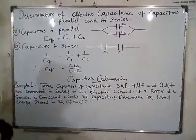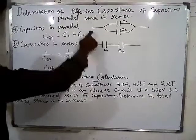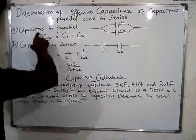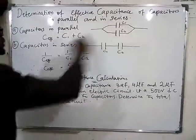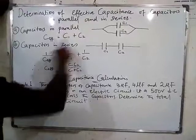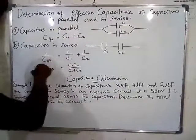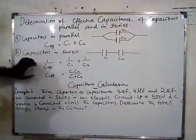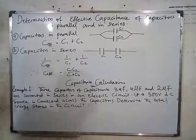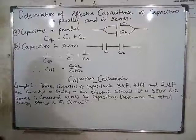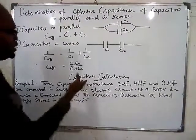Whenever capacitors are connected in parallel, you use direct addition. But whenever they are connected in series, you add up the reciprocals to find the reciprocal of the effective capacitance. Take note of these relations.